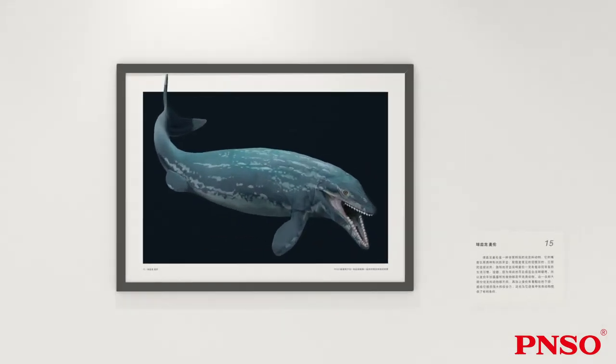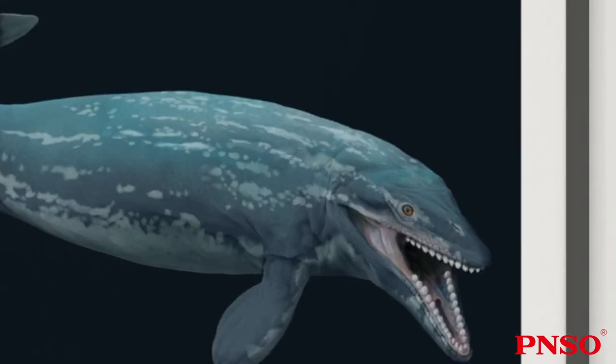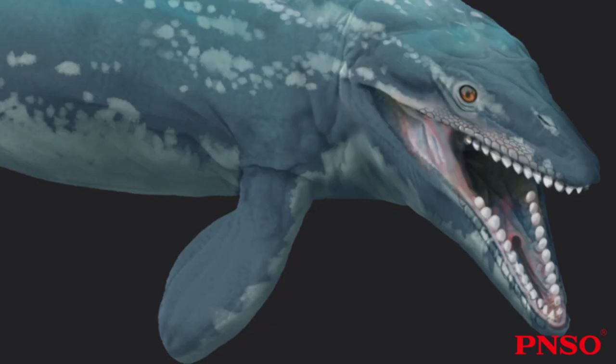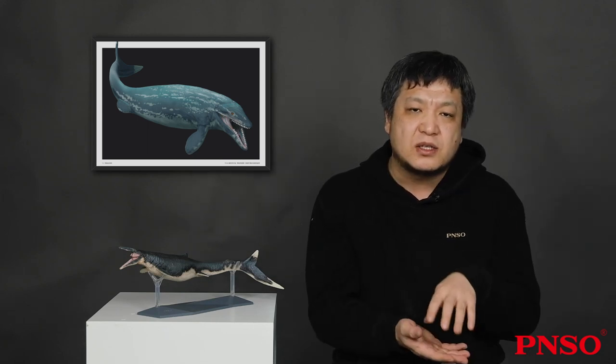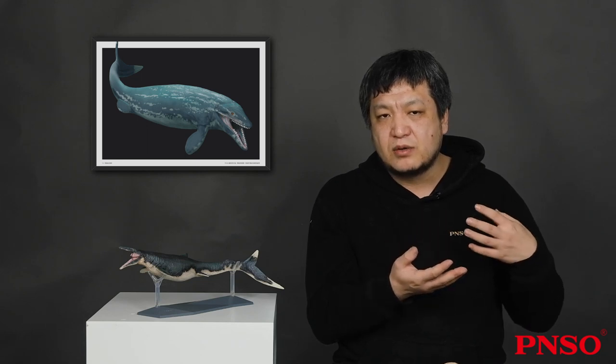Speaking of adaptability, I have to mention Globidens. A special feature of Globidens was that its teeth evolved into a spherical shape. Most Mosasaurs were top predators with sharp teeth, but Globidens' teeth were blunt, unsuitable for preying on large animals. The spherical teeth were suitable for eating hard-shell animals—it could eat crabs and mussels. This shows it liked to move at the bottom of the sea, occupying a niche different from other Mosasaurs, proving again that Mosasaurs were highly differentiated.